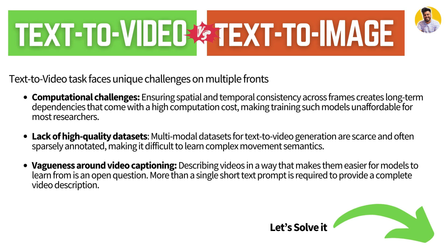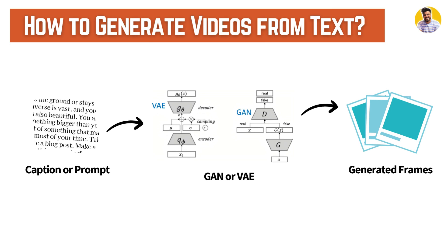All of these challenges can now be solved with the help of diffusion models or GAN or VAE-based models. Those models work the same way: they take your prompt or caption, pass it into the GAN or VAE architecture, then generate different frames based on your caption and combine them to form a video.